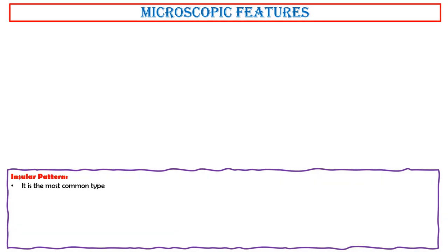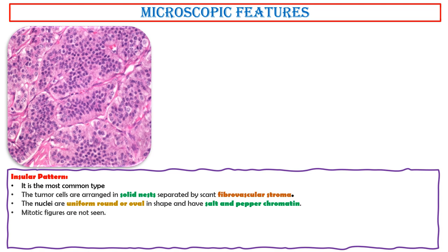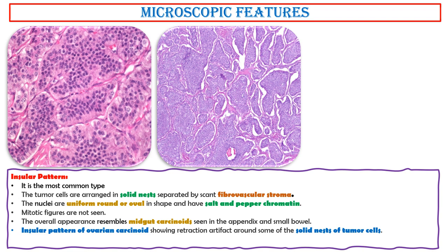The insular pattern is the most common type, approximately 50%. The tumor cells are arranged in solid nests separated by scant fibrovascular stroma. The nuclei are uniform, round or oval in shape, and have salt and pepper chromatin. Mitotic figures are not seen. The overall appearance resembles midgut carcinoids seen in the appendix and small bowel. This photo shows an insular pattern of ovarian carcinoids, showing retraction artifacts around some of the solid nests of the tumor cells.